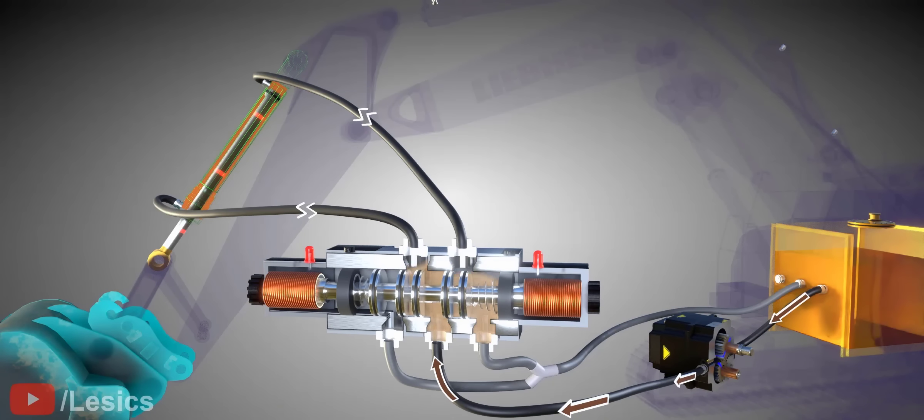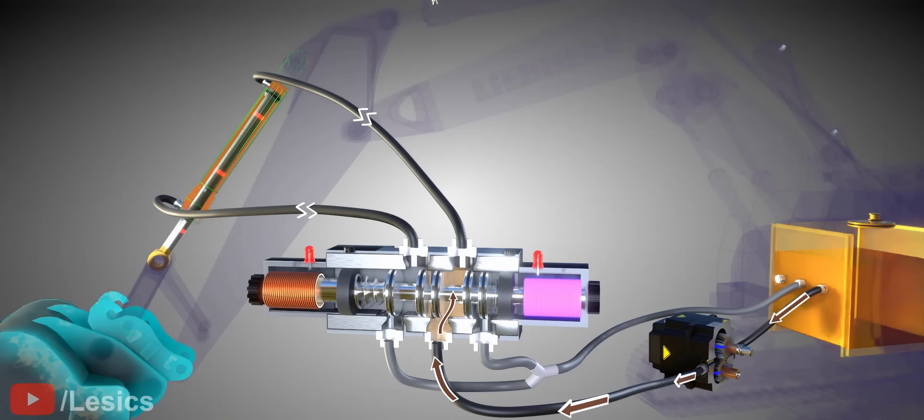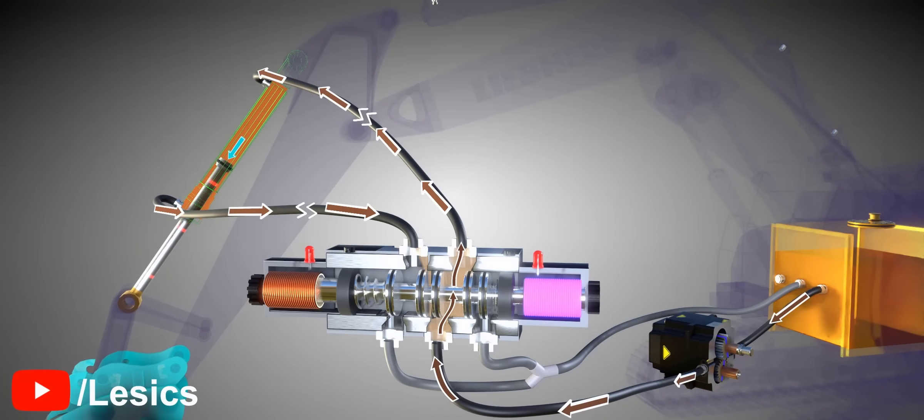If we de-energize the coil, the spool will return back to the central position because of the spring tension. To lower down the bucket, we must energize the right-sided solenoid. You can see that the spool moves right and diverts the oil flow. Now the piston experiences a force in the opposite direction and the bucket is lowered.